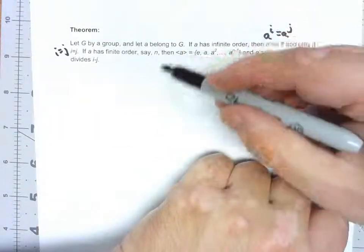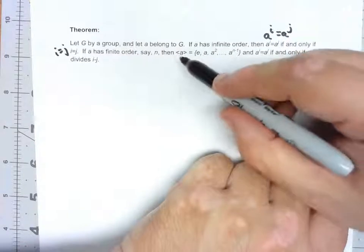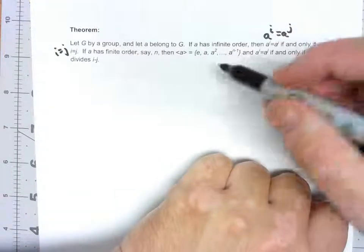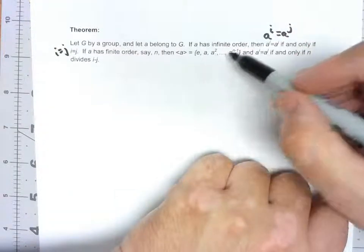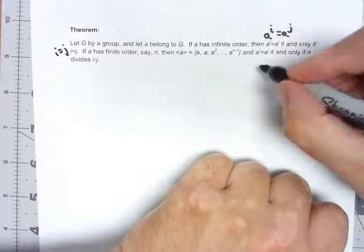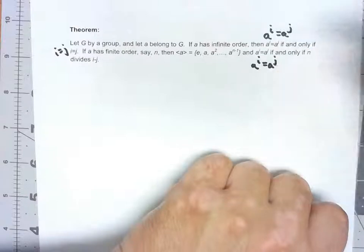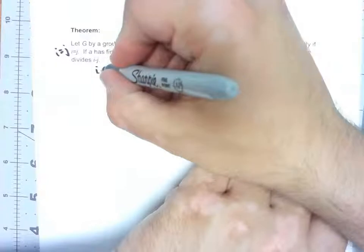If A has finite order, for instance N, then the group generated by A is E, A, A squared up to A to the N minus 1, and the same kind of thing: A sub I equals A sub J if and only if N divides I minus J.